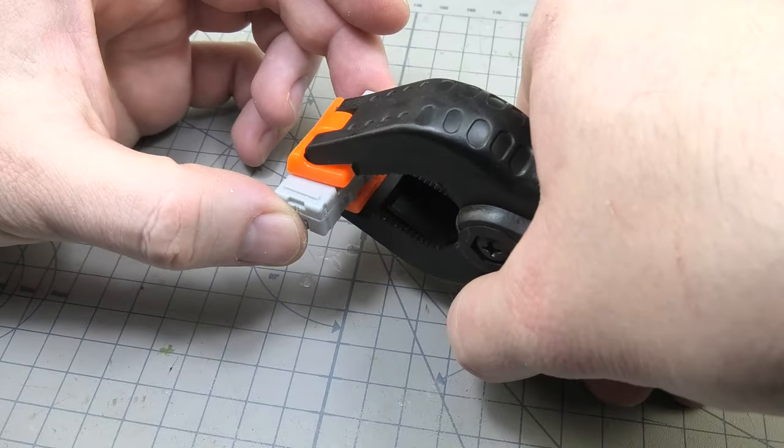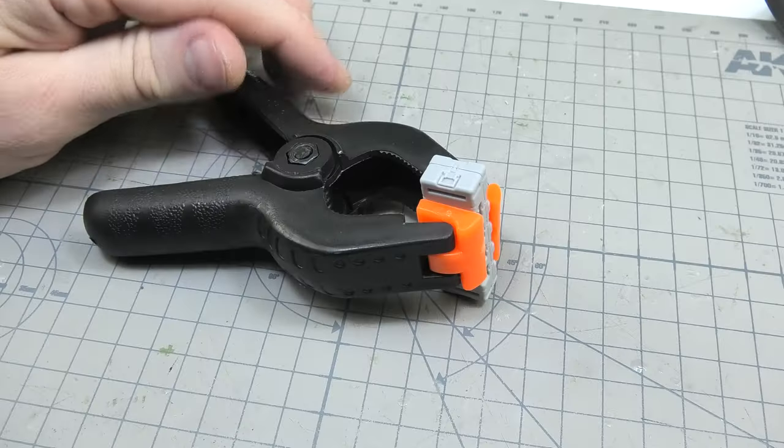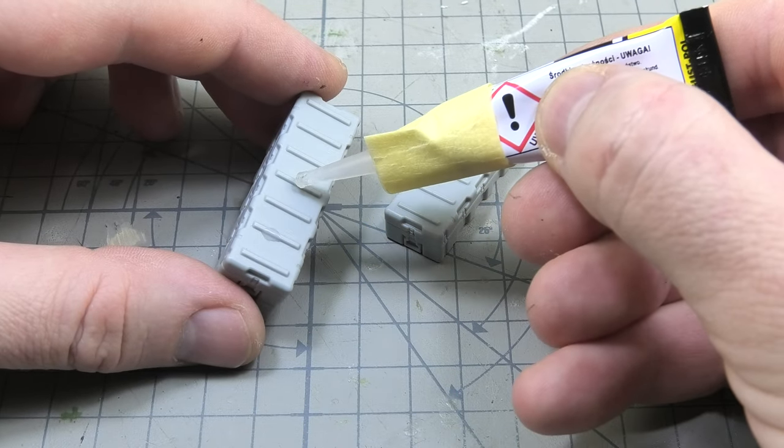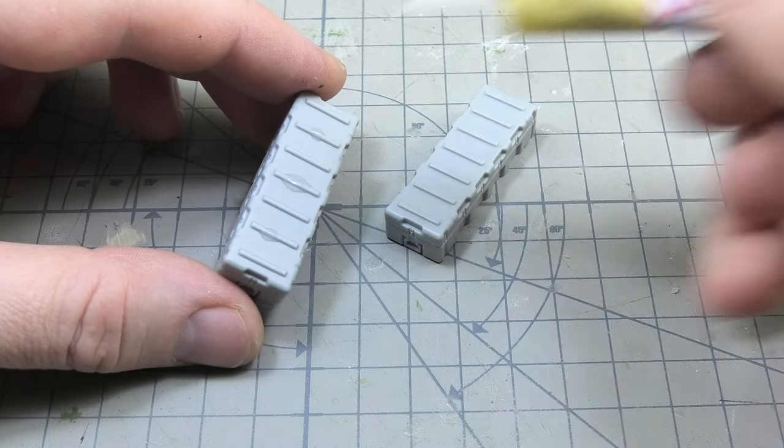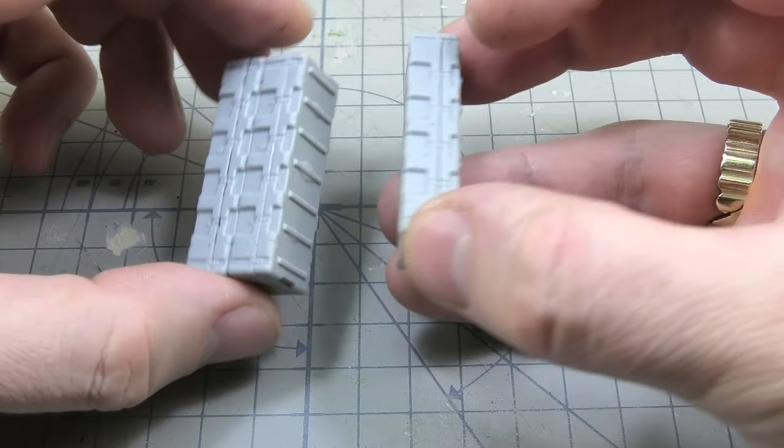I used carpentry clamps to stick both parts tightly together. At this stage I glued the individual cases together because I planned that they would be placed on the diorama in such a position. Now the usual superglue is sufficient.